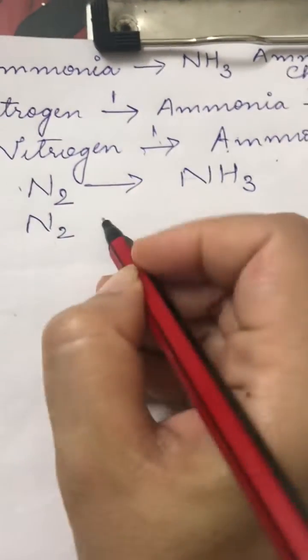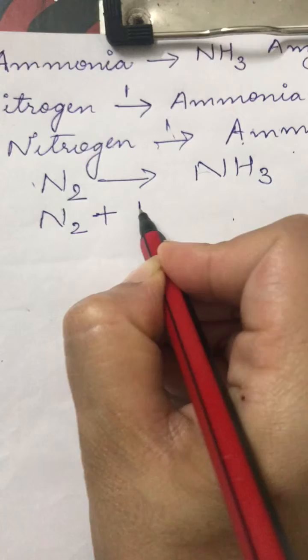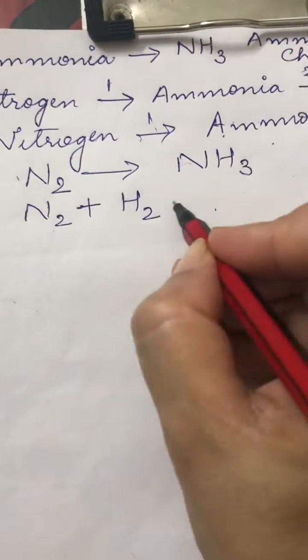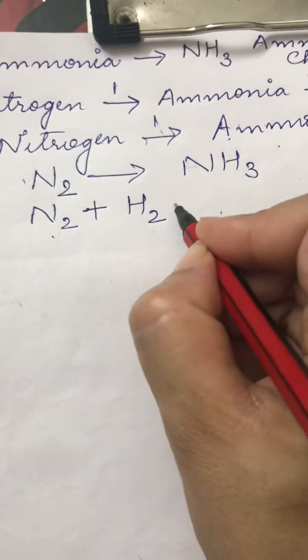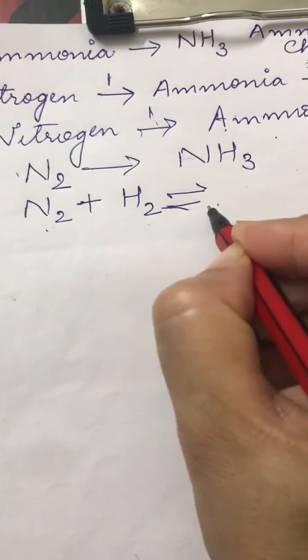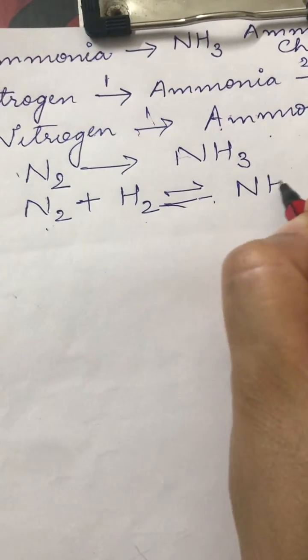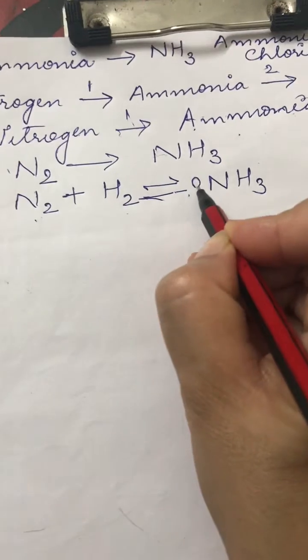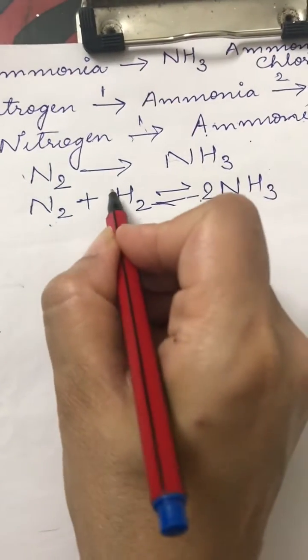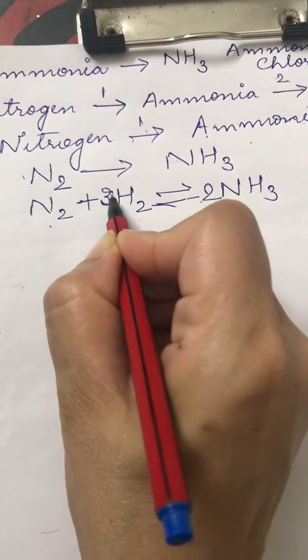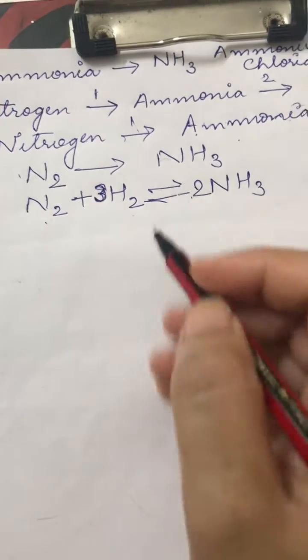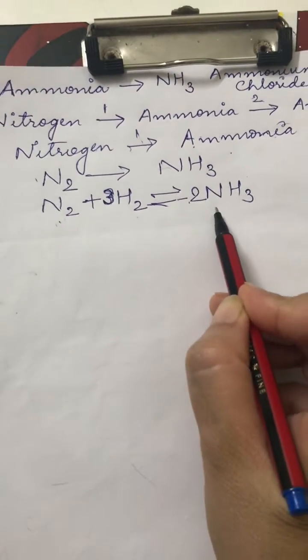We write N2. We know this is a very basic and common equation for the Haber's process. Nitrogen plus hydrogen, it is a reversible reaction. It forms ammonia NH3. This is how we are supposed to solve this. And to make sure that the equation is balanced, we put a 2 here, we put a 3 here. If you want to write the conditions in this reaction, you can do that. Otherwise, you can solve the equation in this form.